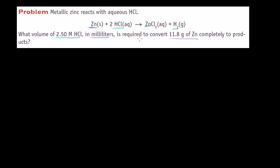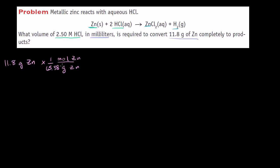Let's do the problem. The first thing we want to do: we're starting off with 11.8 grams of zinc — they give us that information. Now we're going to figure out how many moles of zinc that is. We're going to convert this to moles, so it's going to be moles of zinc over grams of zinc. If you look it up on a periodic table, zinc has an atomic weight of 65.38, so its molar mass is 65.38 — that's one mole for every 65.38 grams.